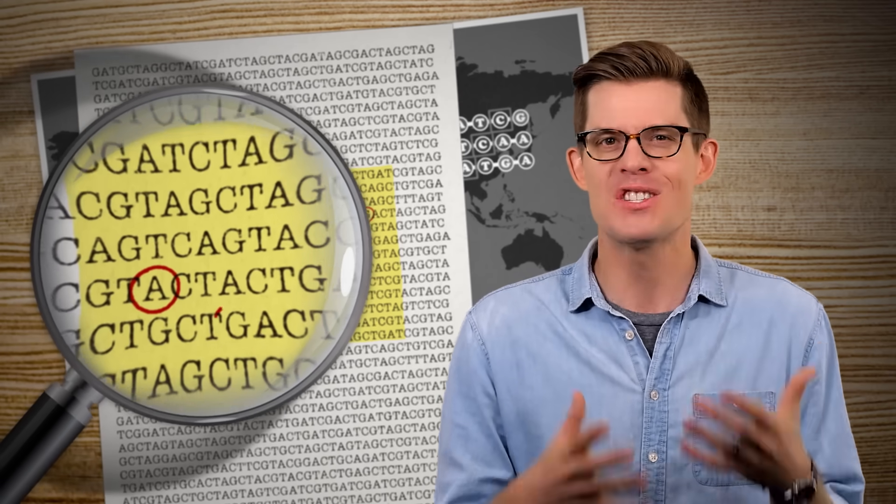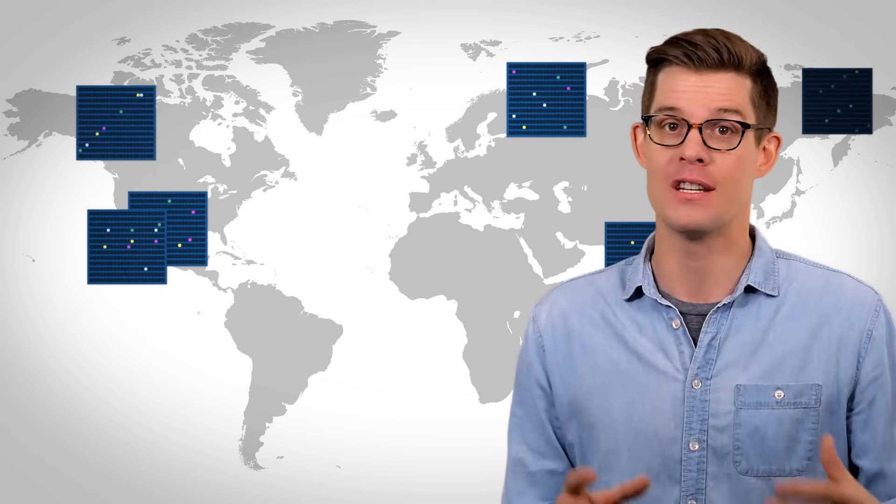Companies that test your DNA ancestry read thousands of these single letter changes in your genome to make a sort of signature of your unique genetic variation. Then they compare your signature to thousands of reference individuals from various parts of the world, and do a bunch of fancy math to see which parts of your genome most likely came from certain geographic areas.